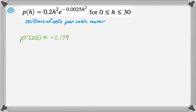And then we want to figure out the units. So P of H is in millions of cells per cubic meter, and H is in meters. So it's millions of cells per cubic meter per meter. And then we need to interpret this in the context of the problem.